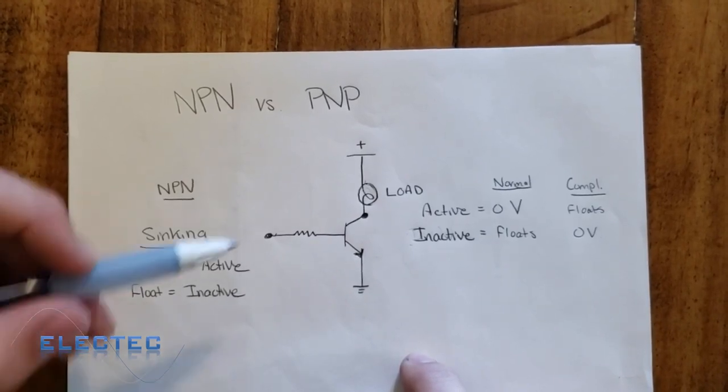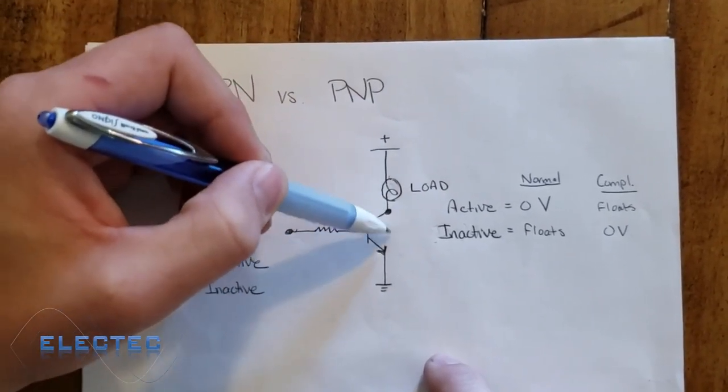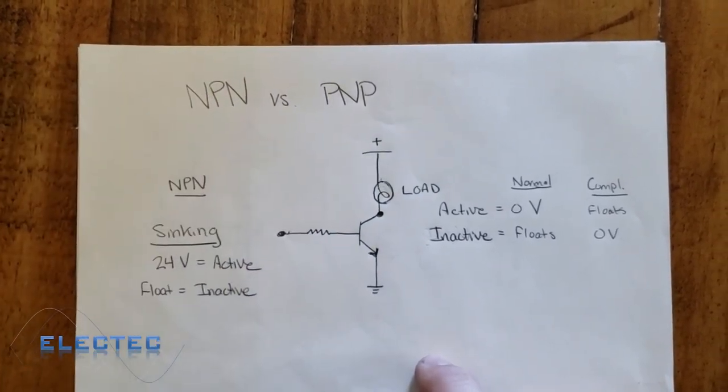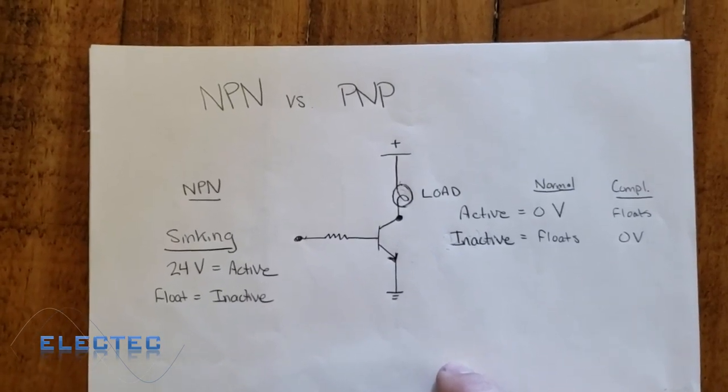Same thing on the load side of the transistor. We source our load, and the NPN transistor sinks it. So if you can get in your head that an NPN transistor sinks, you'll always remember what it's doing.